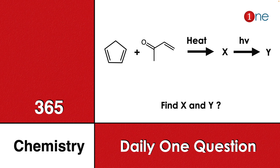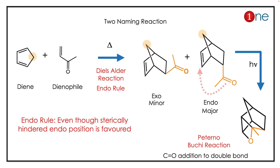Your ultimate aim is to find what X and Y will be. The answer involves two named reactions: one is the Diels-Alder reaction and the other is the Baeyer-Villiger reaction. Here you have a diene and a dienophile, so first the Diels-Alder reaction occurs — addition of diene to dienophile forming a cyclic non-aromatic system.